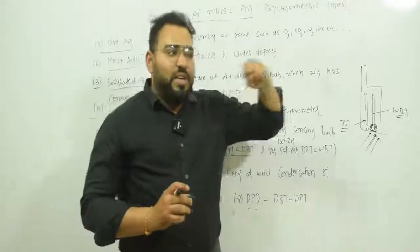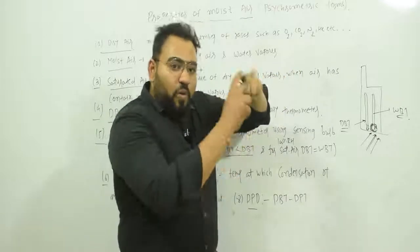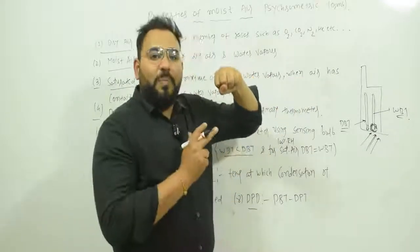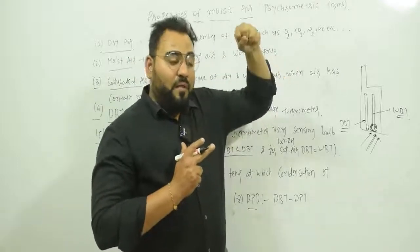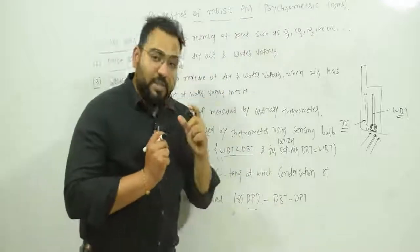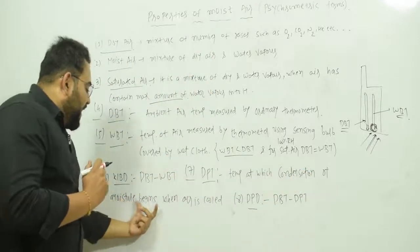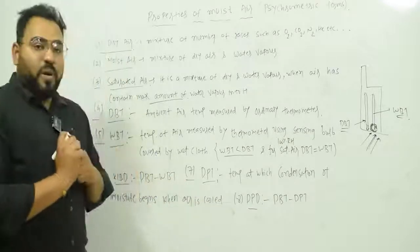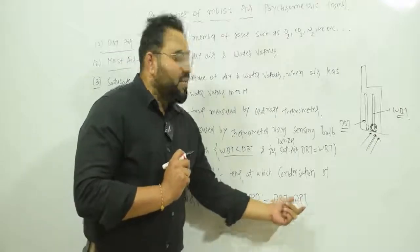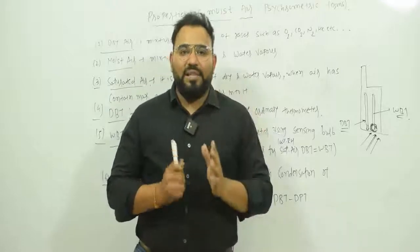At the dew point, the air is at maximum water vapor capacity. If you cool it further, the capacity to hold water vapor is reduced, so some water vapor condenses and falls down in the form of dew. That is why it is called dew point temperature — it is the temperature at which condensation begins when air is cooled. Dew point depression (DPD) is defined as dry bulb temperature minus dew point temperature. The remaining psychrometric terms will be covered in the next video.